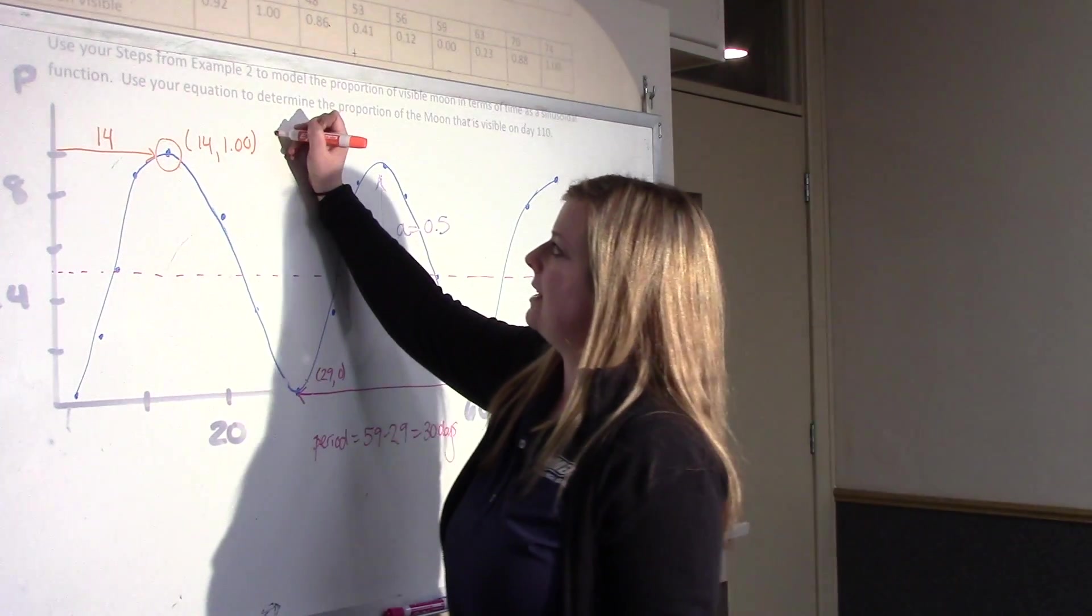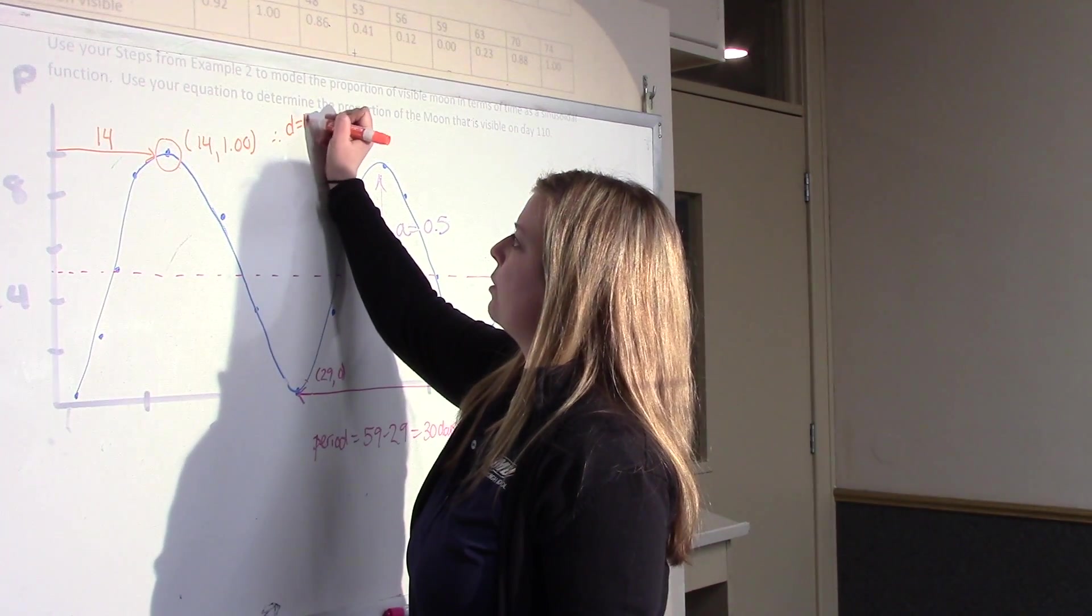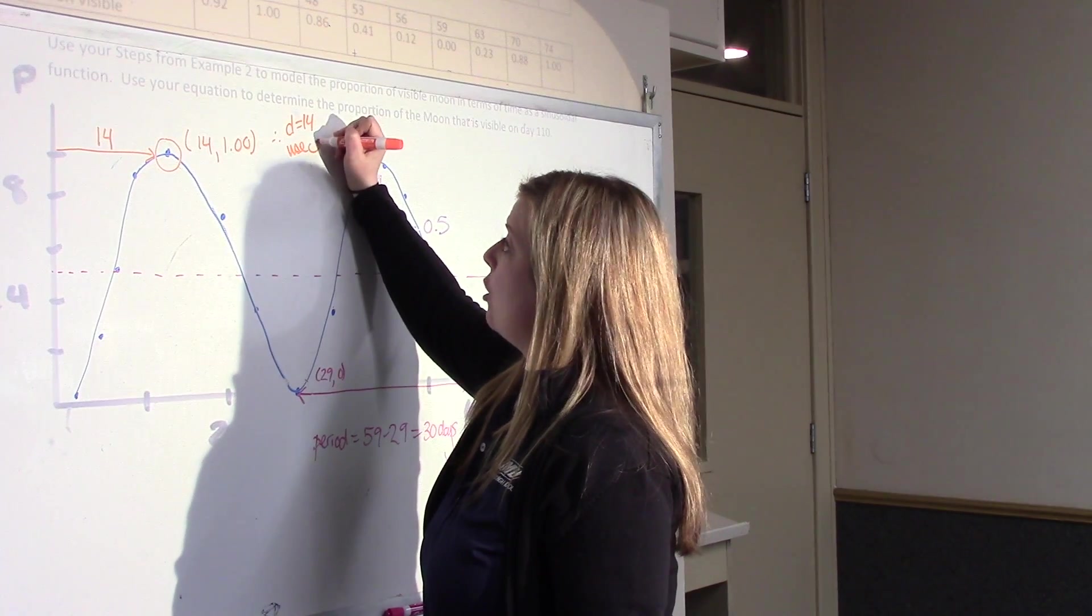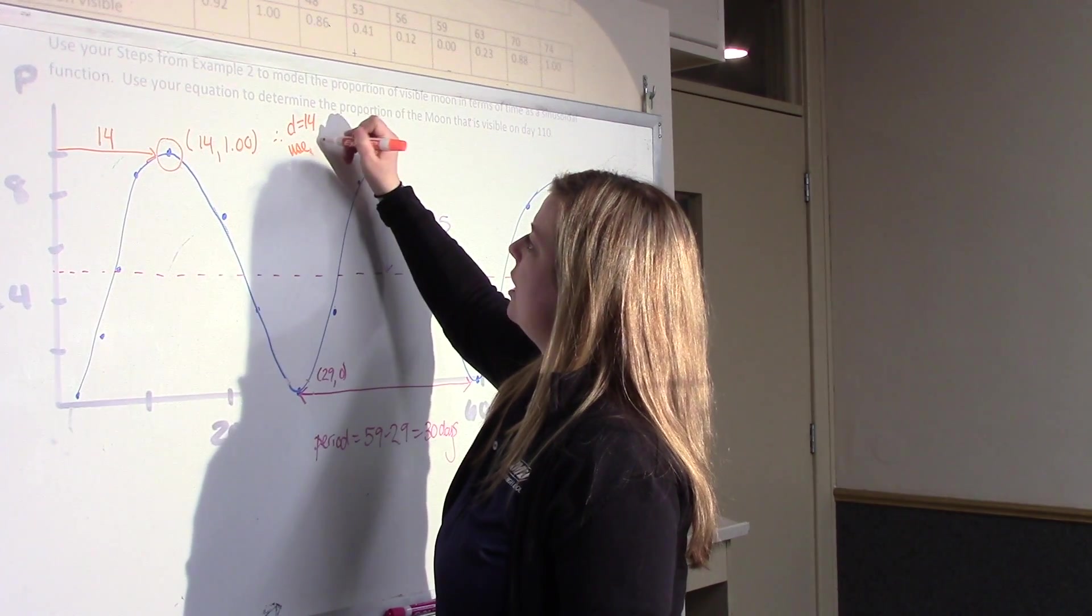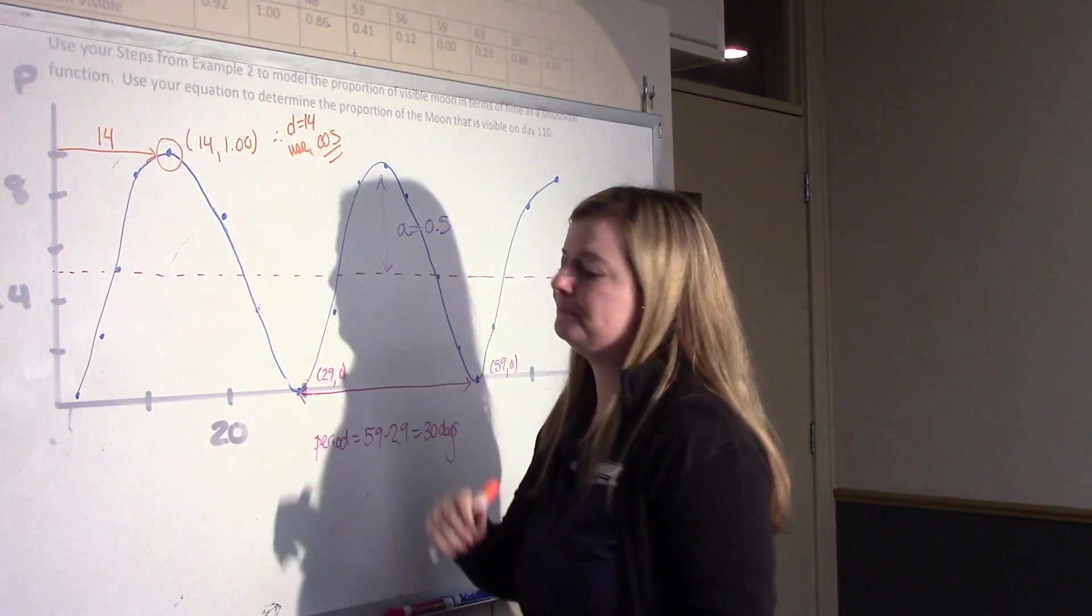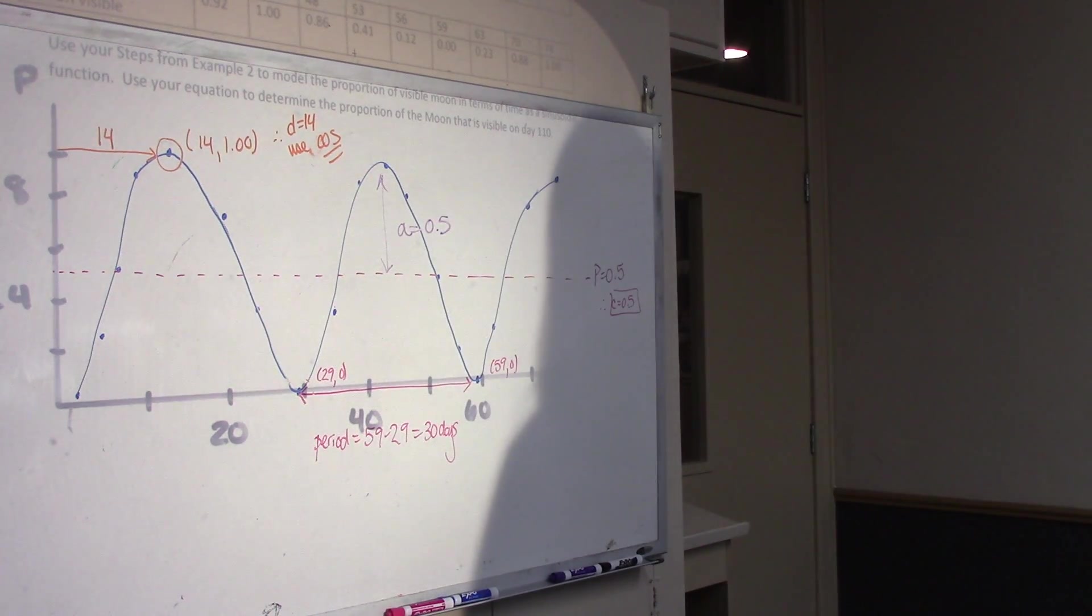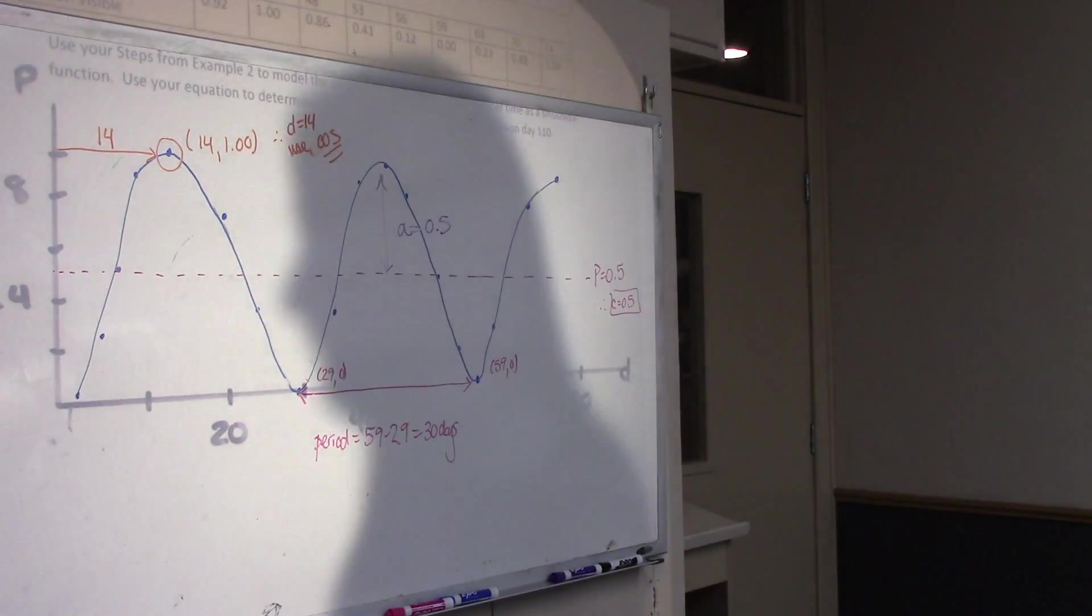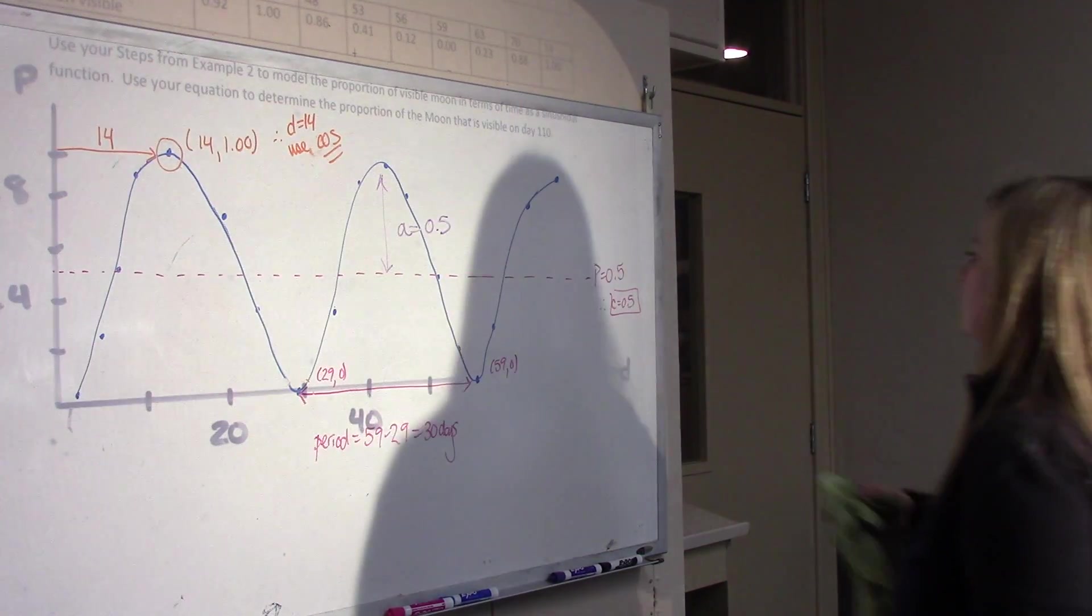So therefore my D value is 14, and I'm going to use cosine. Sorry, not negative cosine, just cosine, as it's a max.